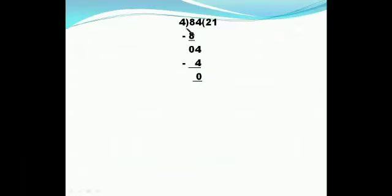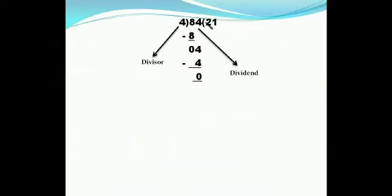Now, 84 divided by 4. Here 84 is the dividend and 4 is the divisor. You say the tables of 4, starting with the first digit, 8. Since 4 twos are 8, write 2 in the quotient. 8 minus 8 is 0. Bring down 4. Since 4 ones are 4, write 1 in the quotient. 4 minus 4 is 0. So the quotient is 21 and the remainder is 0.